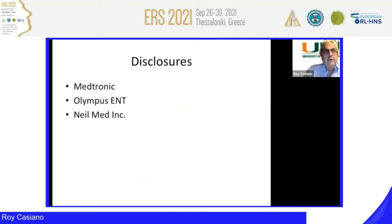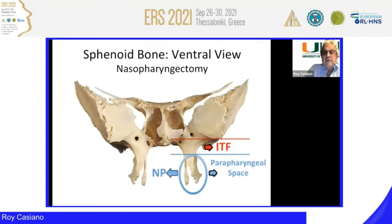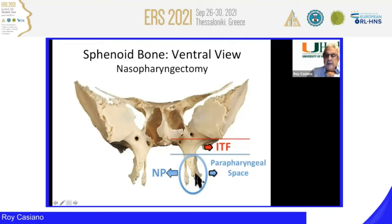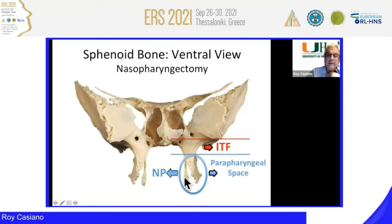This is the ventral view of the sphenoid bone. We're going to focus on the anatomy in reference to nasopharyngectomy. The pterygoid bone itself becomes a very critical landmark whether you're operating in the nasopharynx or in the infratemporal fossa. If you go lateral to the lateral pterygoid plate, you will be in the parapharyngeal space, where the main structures are the lateral pterygoid muscle and then further out, neurovascular bundles and the parapharyngeal carotid artery coursing downward.